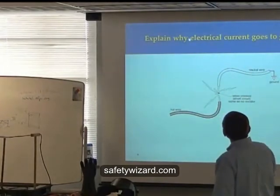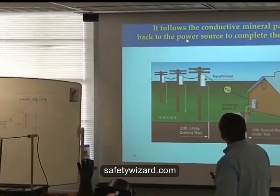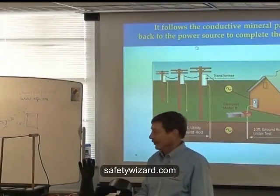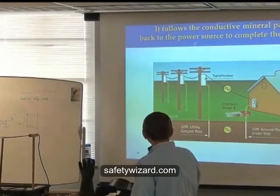All right. Very good, very good. Why does current go to ground? To ground, it follows the conductive mineral path back to its source to create that completed circuit. Let's try that together. Okay.